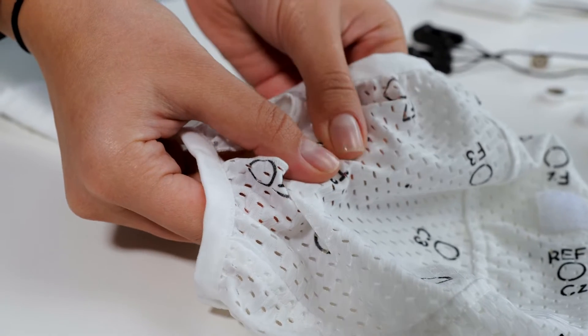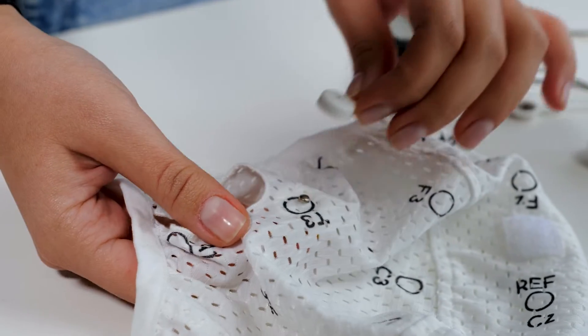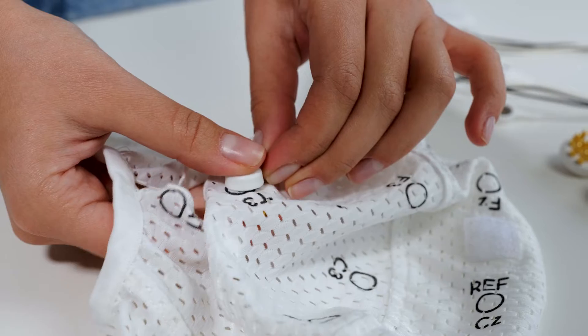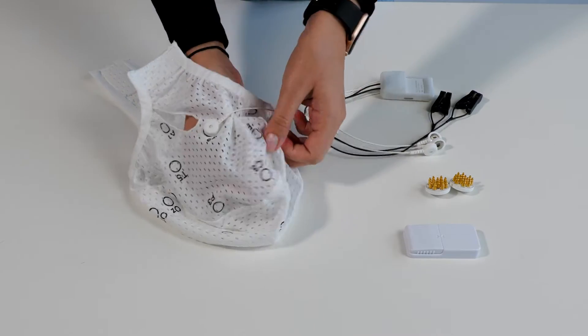Place the electrode inside the cap and push the button through the hole. Fix the electrode with the connector. Repeat the step for the remaining electrodes.